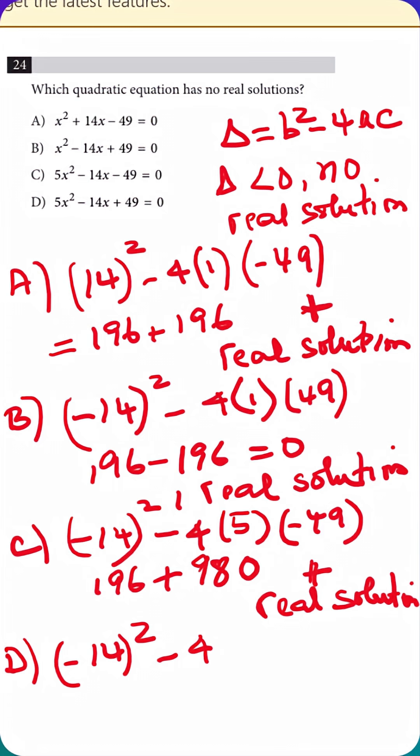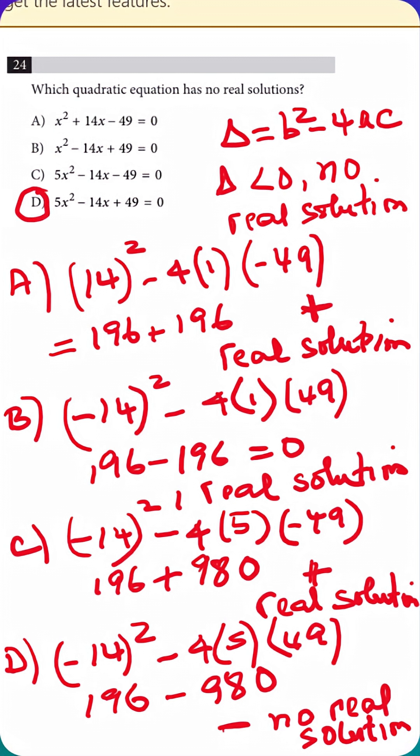Option d, negative 14 squared minus 4 times 5 times 49, that equals 196 minus 980 negative, which means no real solutions. The correct answer is option d.